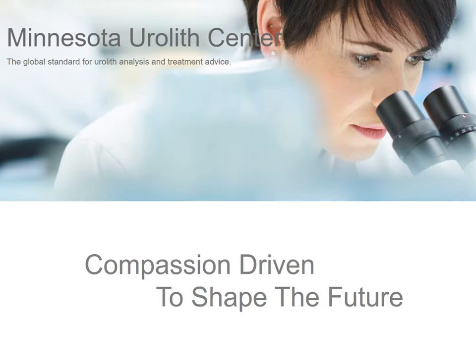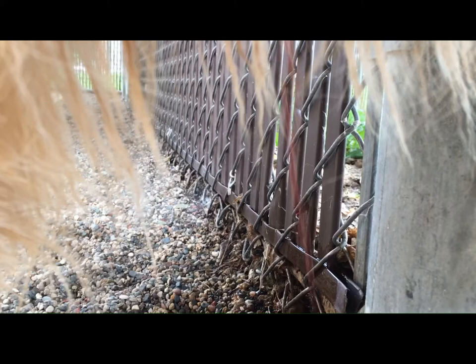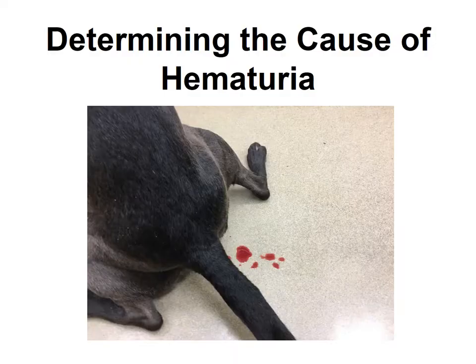The Minnesota Uralis Center — compassion driven to shape the future. Can you figure out why our dog has hematuria? Hematuria is increased blood in urine. Clinically, red colored urine is often called hematuria because additional diagnostics are needed to separate red pigment in urine from red blood cells. For this discussion, I will use hematuria and red urine synonymously.